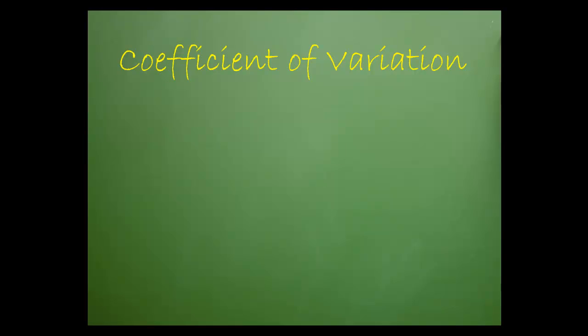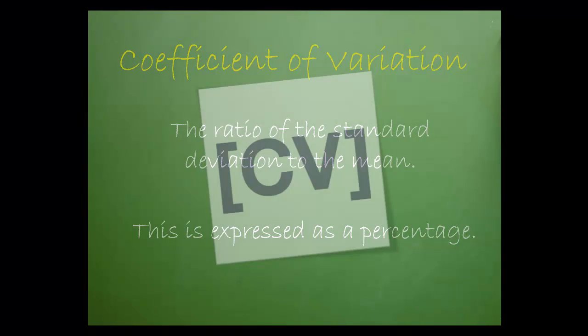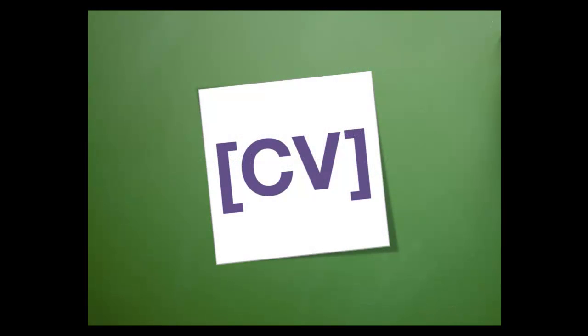Let's start with a definition. The coefficient of variation is the ratio of the standard deviation to the mean. This is expressed as a percentage. In shorthand, you'll often see the coefficient of variation expressed as CV.